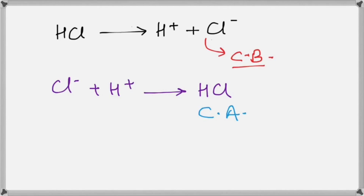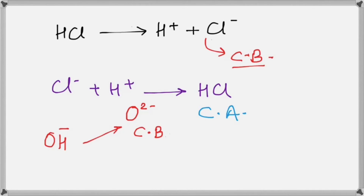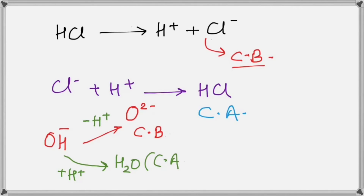And if we look at the reverse reaction — Cl⁻ plus H⁺ forming HCl — then HCl is the conjugate acid of Cl⁻. So the difference between a conjugate acid-base pair is one H⁺. For example, to draw the conjugate base of OH⁻, you remove an H⁺ and get O²⁻. To draw the conjugate acid of OH⁻, you add an H⁺, so OH⁻ plus H⁺ becomes H₂O — that is the conjugate acid of OH⁻.